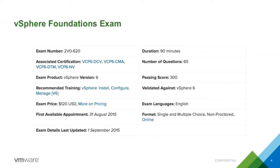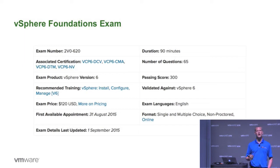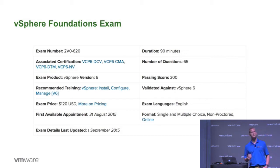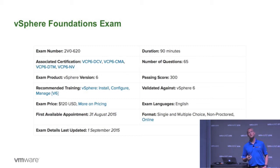With the VCP, it's actually two exams now. You're going to take the vSphere Foundations exam and then the specific exam for your track — like DTM, CMA, DCV, or NV. The vSphere Foundations exam is taken online at home, unproctored, and is 90 minutes. It has a passing score of 300 on a scale of 100 to 500. It has single and multiple choice questions, and on the choose-two or choose-three questions, you will get partial credit if you answer them partially correct.